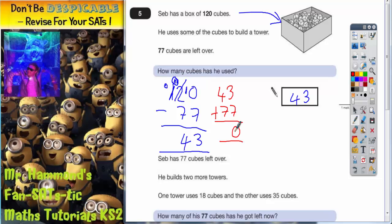3 plus 7 is 10. Put the 0 and carry the 1. 4 plus 7 is 11 plus the 1 is 12. So it does indeed get you back to 120. So 43 must be correct.